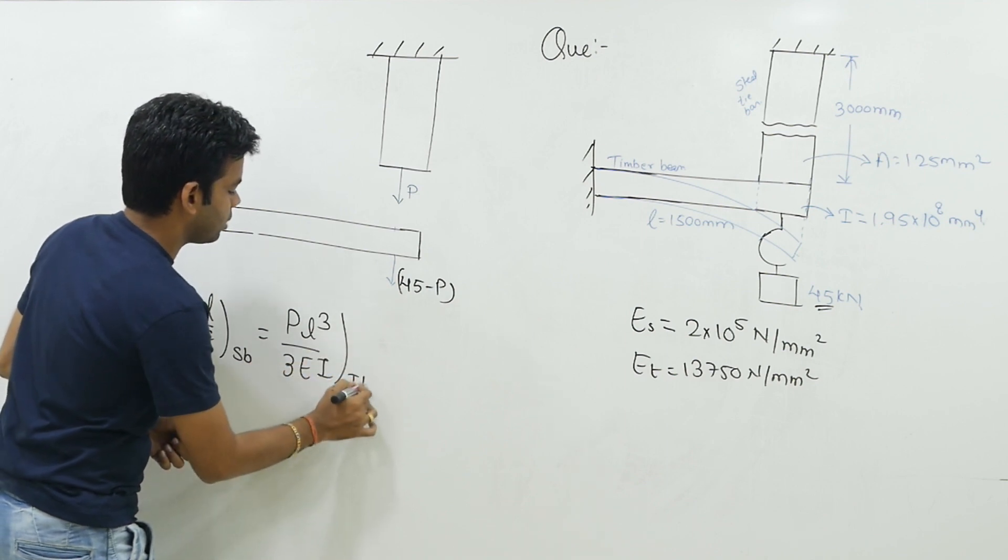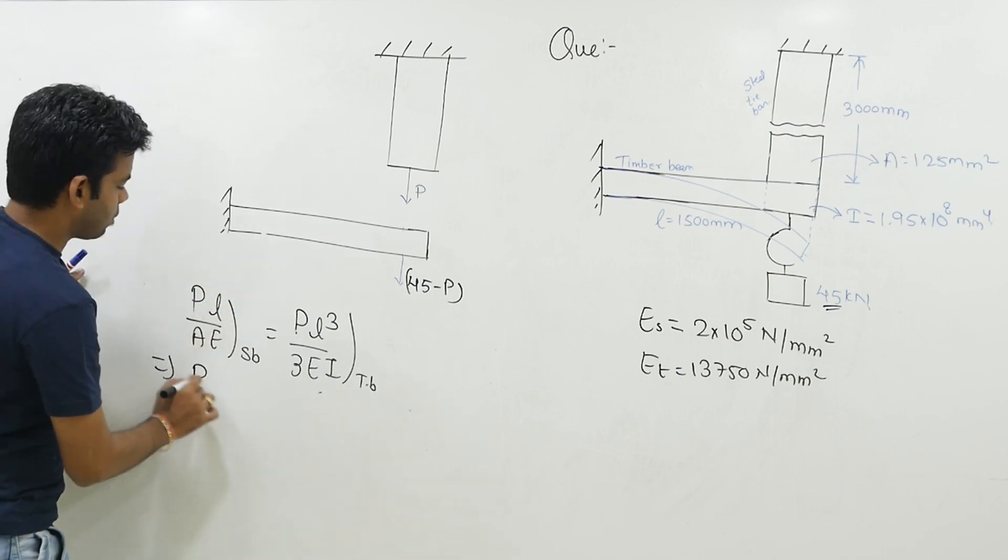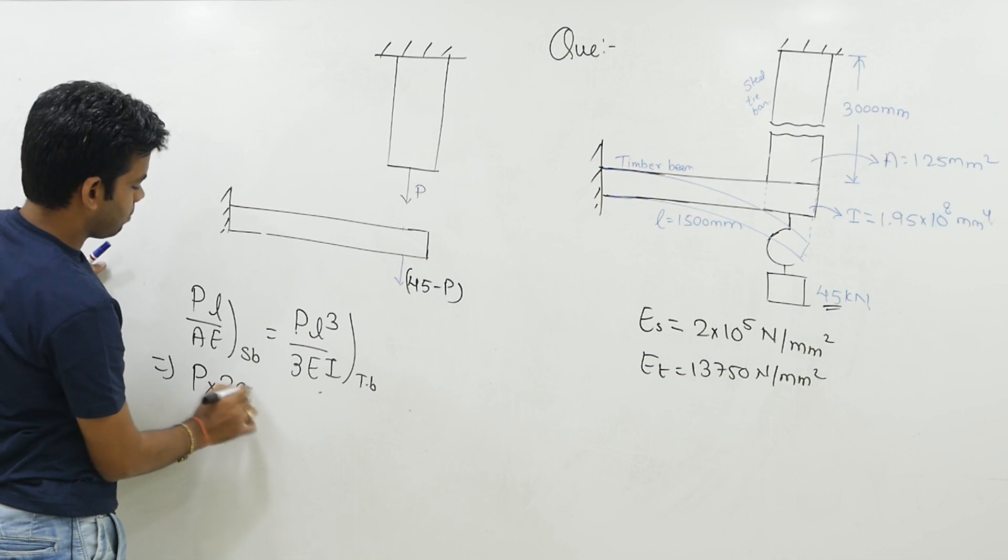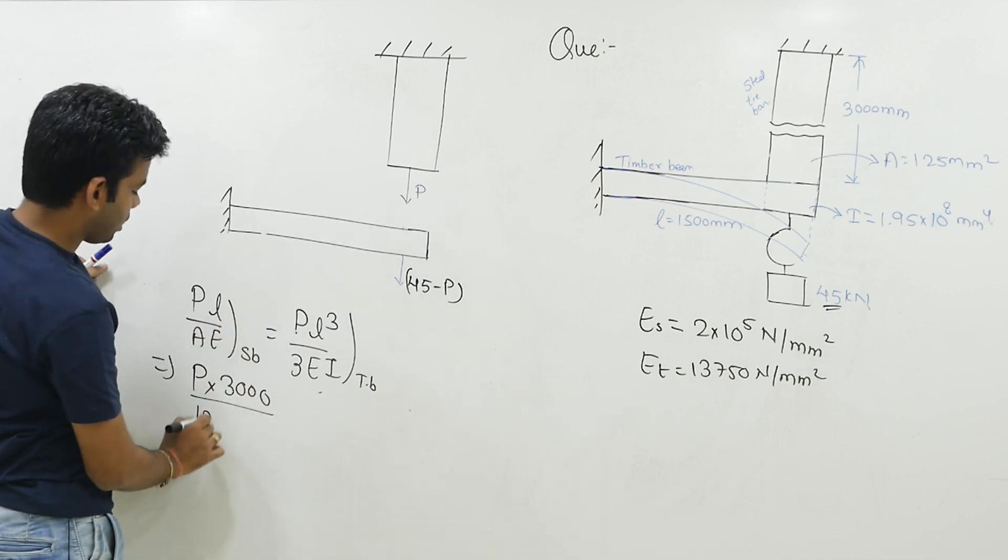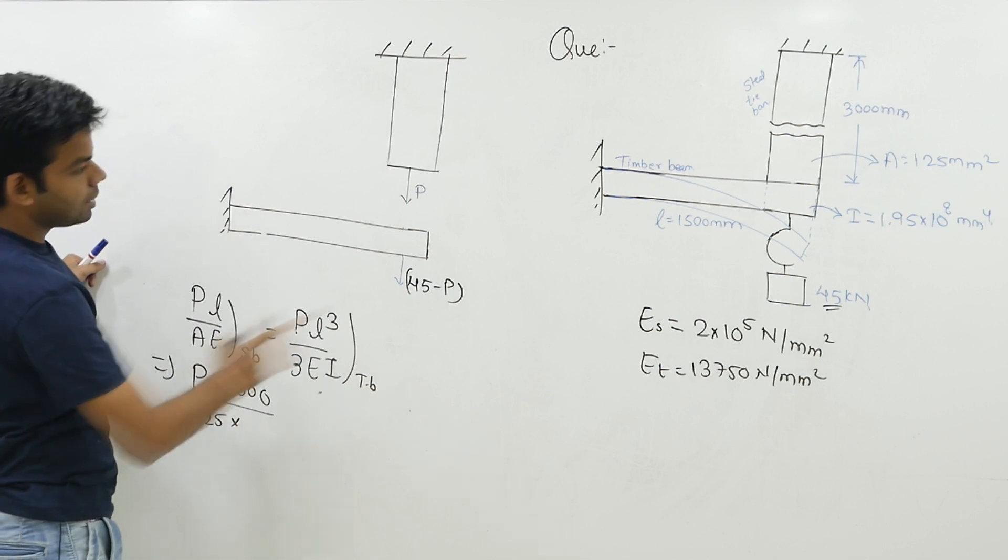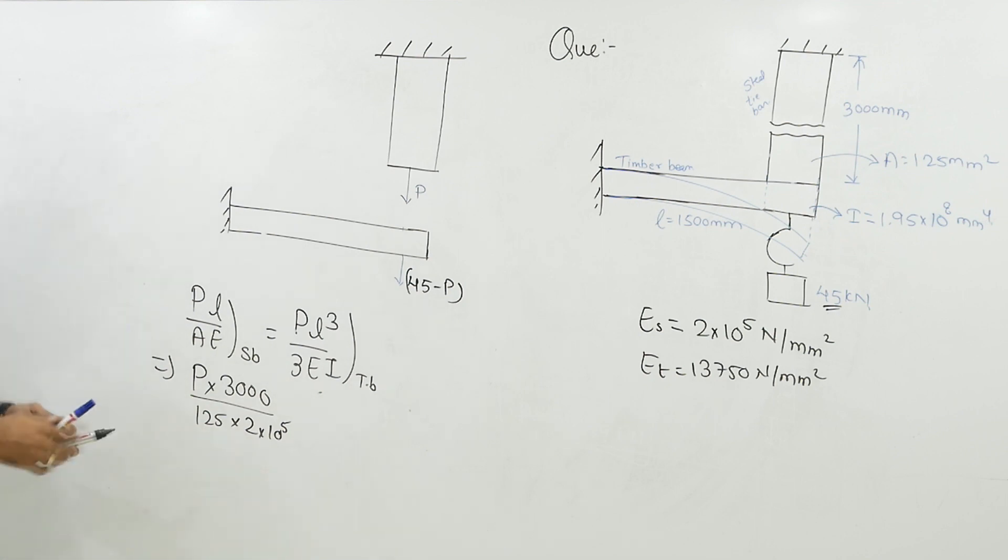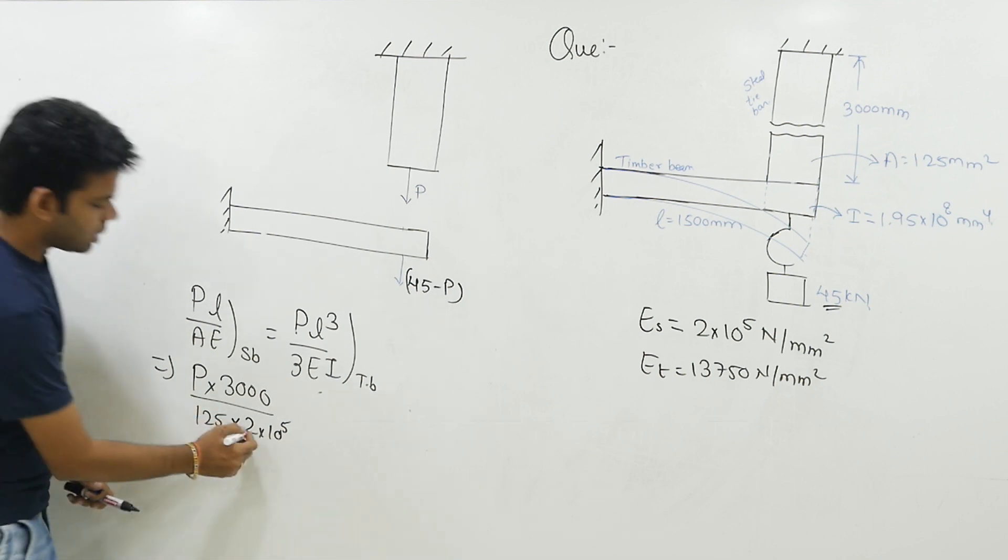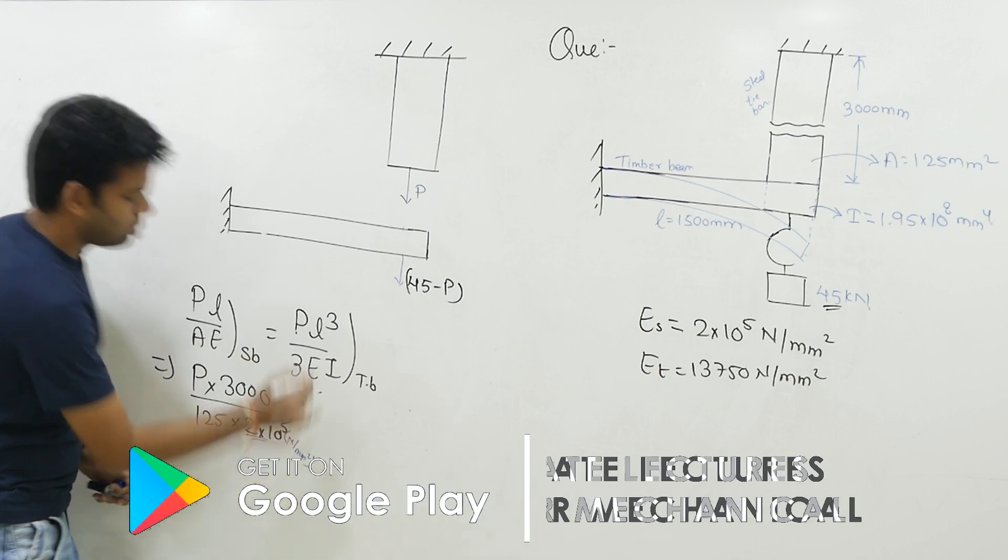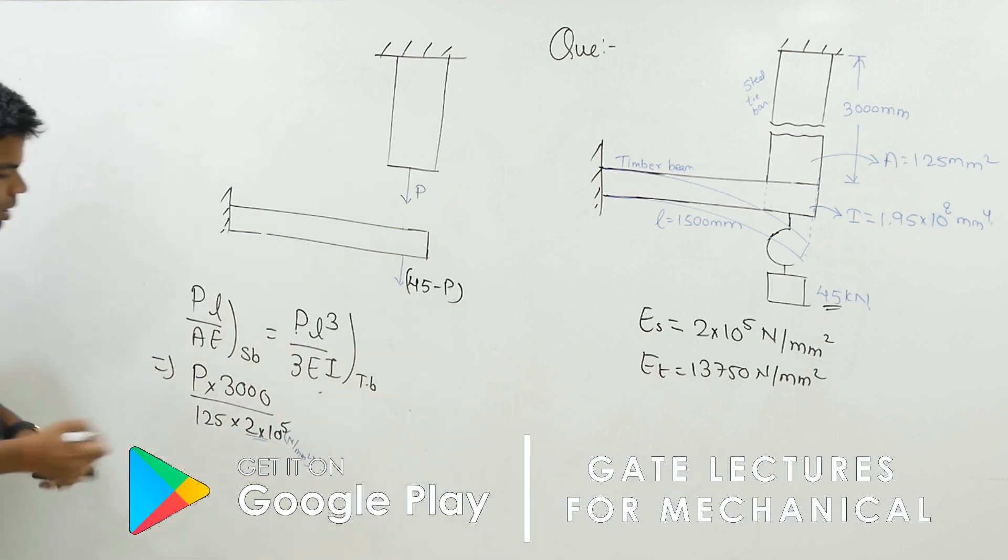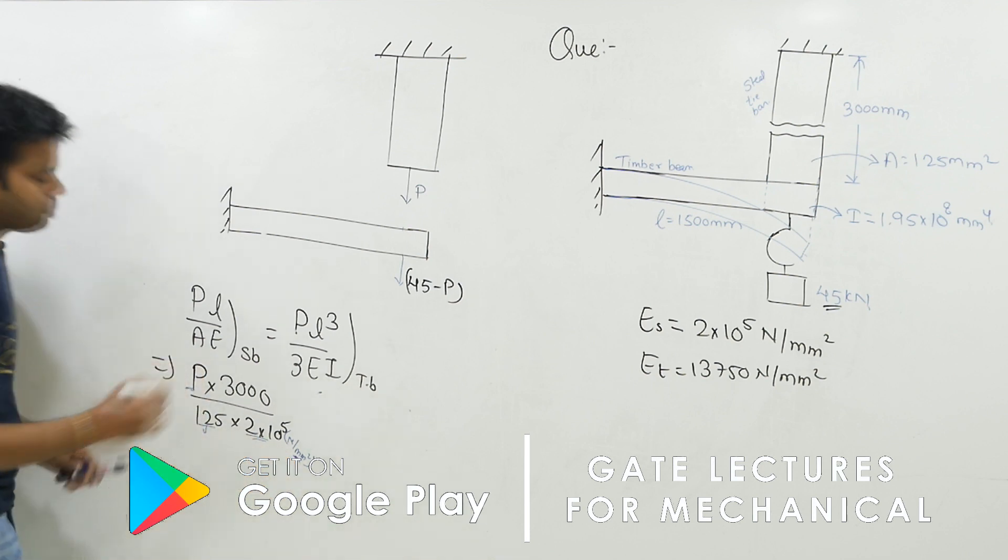Now just put the values. This P which we have to determine, into length of the steel bar which is 3000 mm, divided by area which is 125 mm², and E is 2 × 10⁵ N/mm². Keep units in mind - E is in N/mm², area in mm², all values in mm for easier calculation.